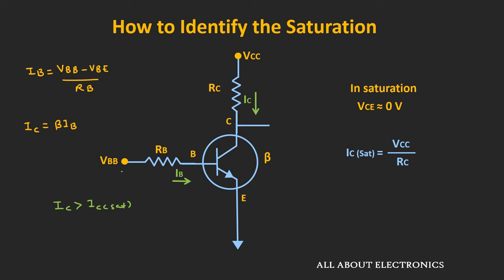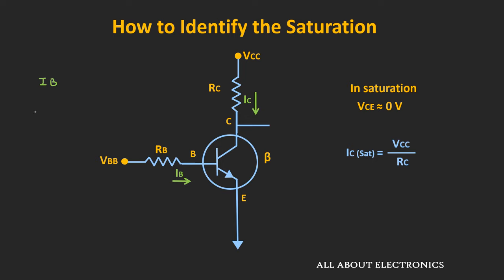That means the collector current cannot go beyond that, and that is what we call saturation in the transistor — even if we try to increase the base current, the collector current will remain the same. Now let's note down the steps for finding the saturation in the BJT. First, assume that the voltage Vce is equal to 0 and find the value of Ic(sat). Similarly, also find the value of the base current. And assuming the transistor is operating in the active region, the collector current Ic can be given as β×Ib. If this collector current is greater than Ic(sat), then we can say that the transistor is operating in the saturation.